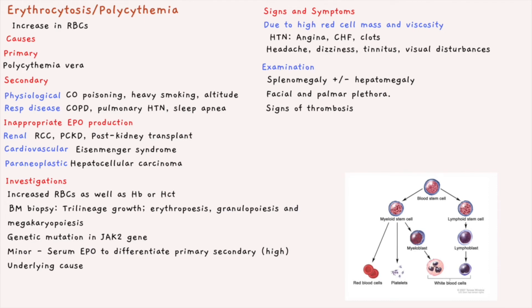Investigations aim to confirm increased red blood cells with raised hemoglobin or hematocrit. Bone marrow biopsy shows trilineage growth: erythropoiesis, granulopoiesis, and megakaryopoiesis. A JAK2 genetic mutation is a major diagnostic criterion. Minor criteria include serum EPO levels, which help differentiate primary from secondary causes — in secondary erythrocytosis, EPO is elevated. Additional investigations to identify the underlying cause may also be performed.